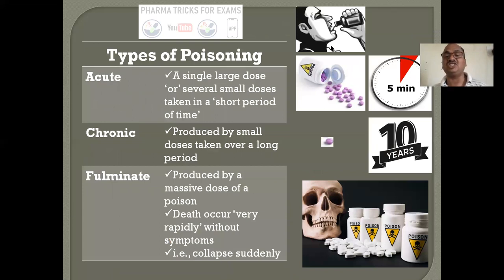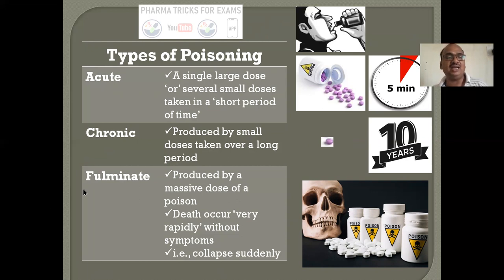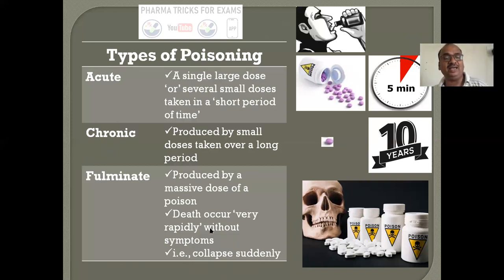Types of poisoning: acute poisoning — for a short time, immediately. The patient takes all the tablets within five minutes — a single large dose, or several small doses within a short period. Chronic means the patient takes small doses for a longer period, like ten years. Fulminant — produced by massive doses of poison, taken rapidly. Death occurs very rapidly without symptoms — the patient collapses suddenly.